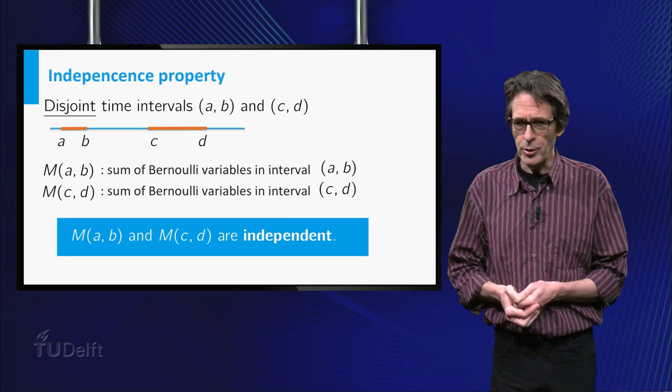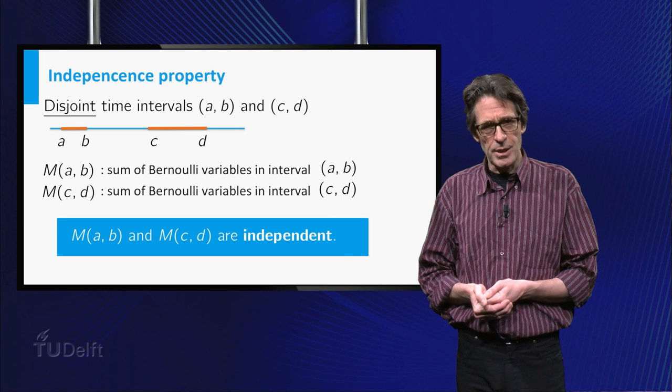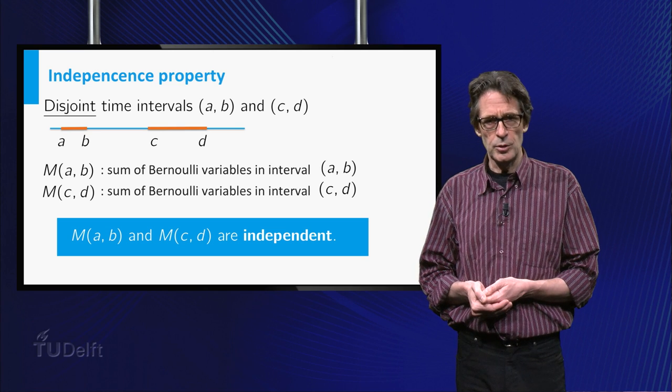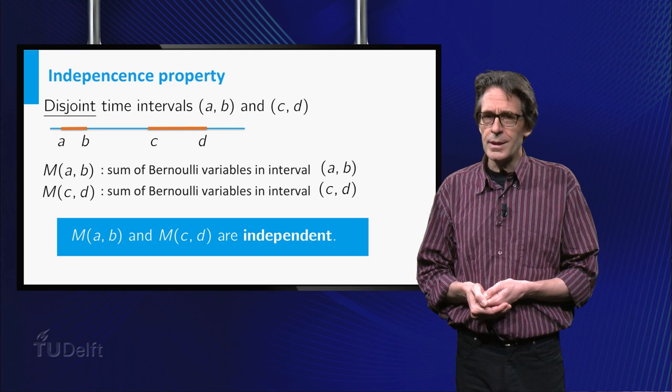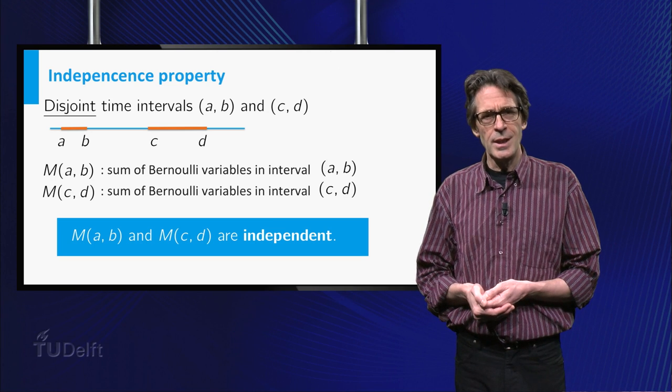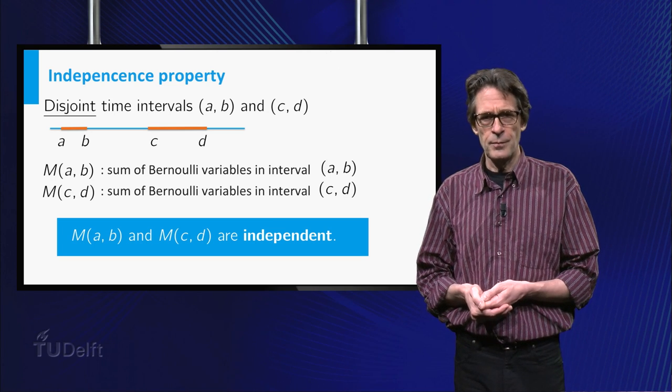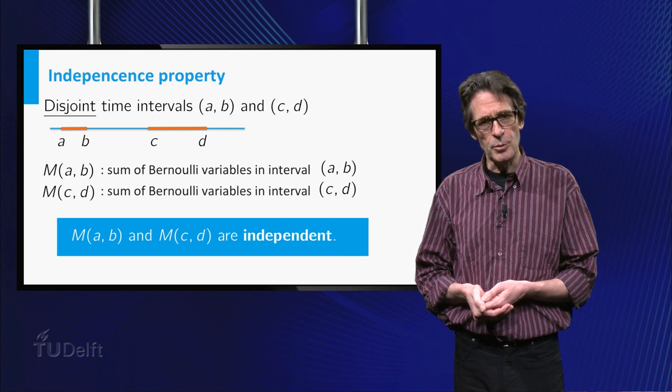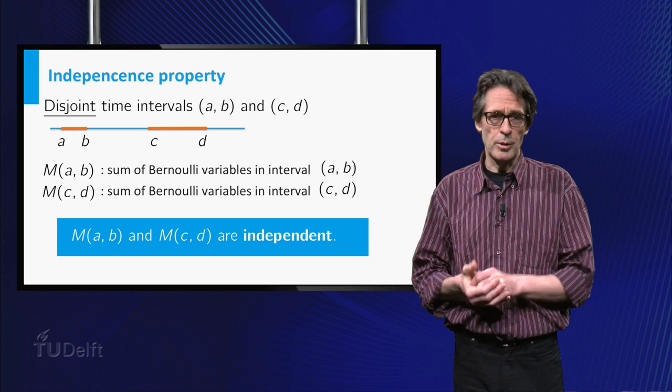In summary, the random variables M(a,b) and M(c,d) are both independent and approximately have Poisson distributions. Moreover, the expected value of M(a,b) is the intensity of the process times the length of the interval. These in fact are two important characteristics of the process that is the subject of this lecture, the Poisson process.